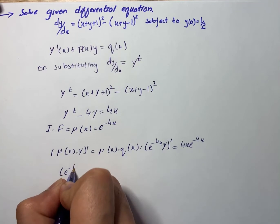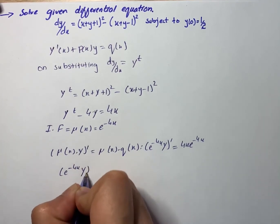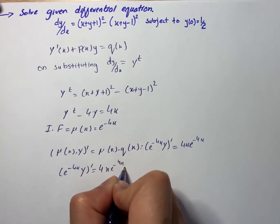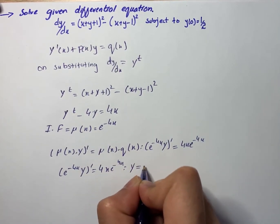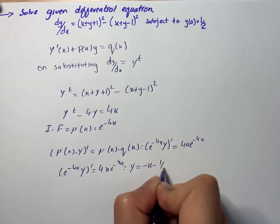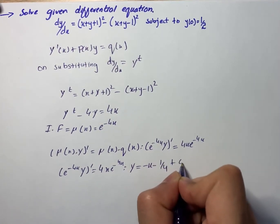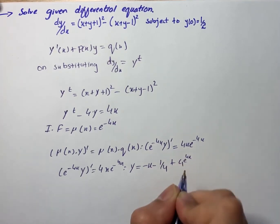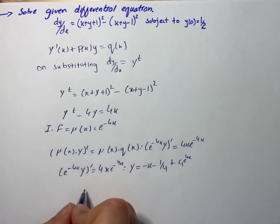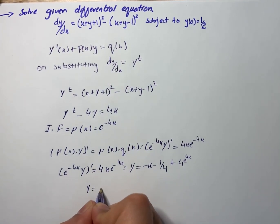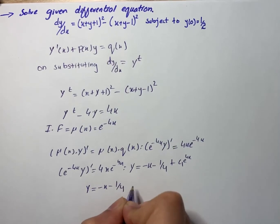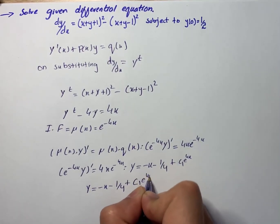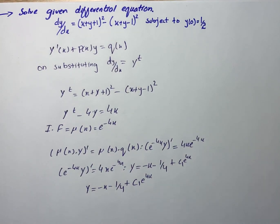So e raised to power minus 4x times y whole prime equals 4x times e raised to power minus 4x. Integrating, y equals minus x minus one-quarter plus C₁ times e raised to power 4x. That is our solution. The final form is y equals minus x minus one-quarter plus C₁ e raised to power 4x.